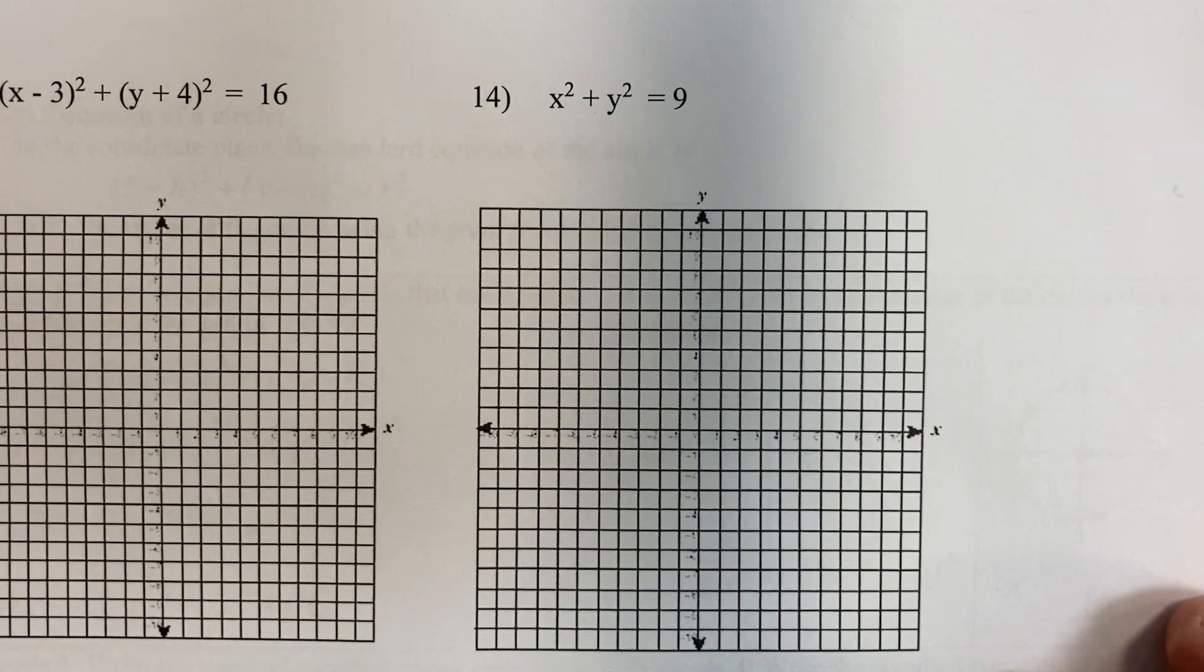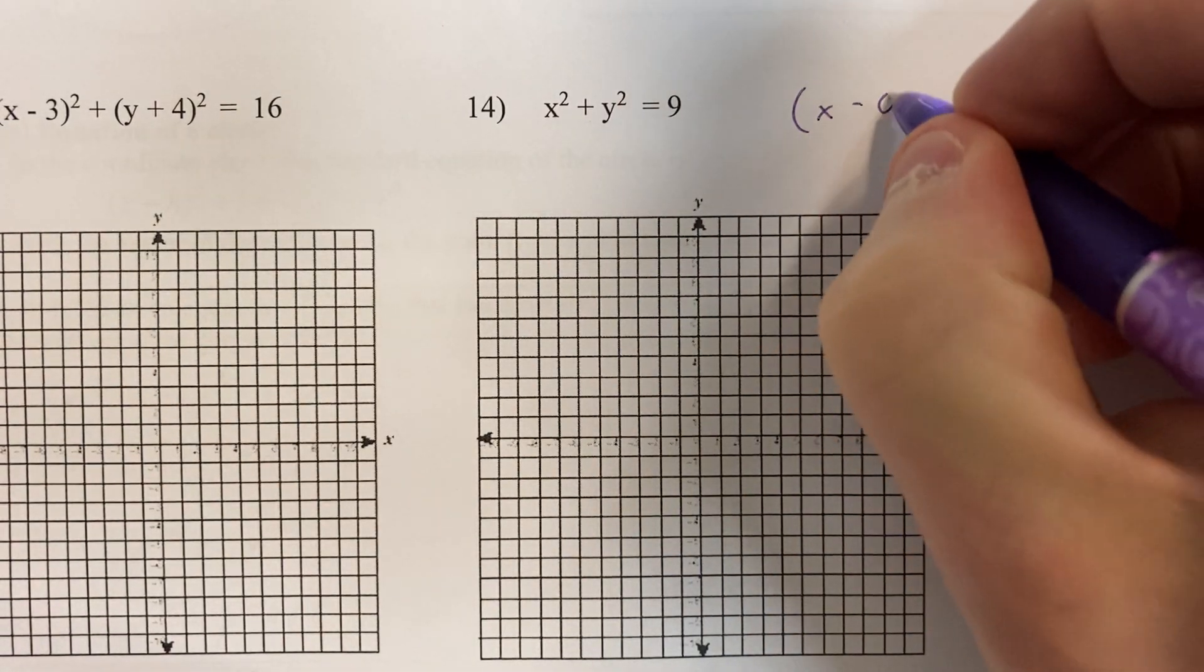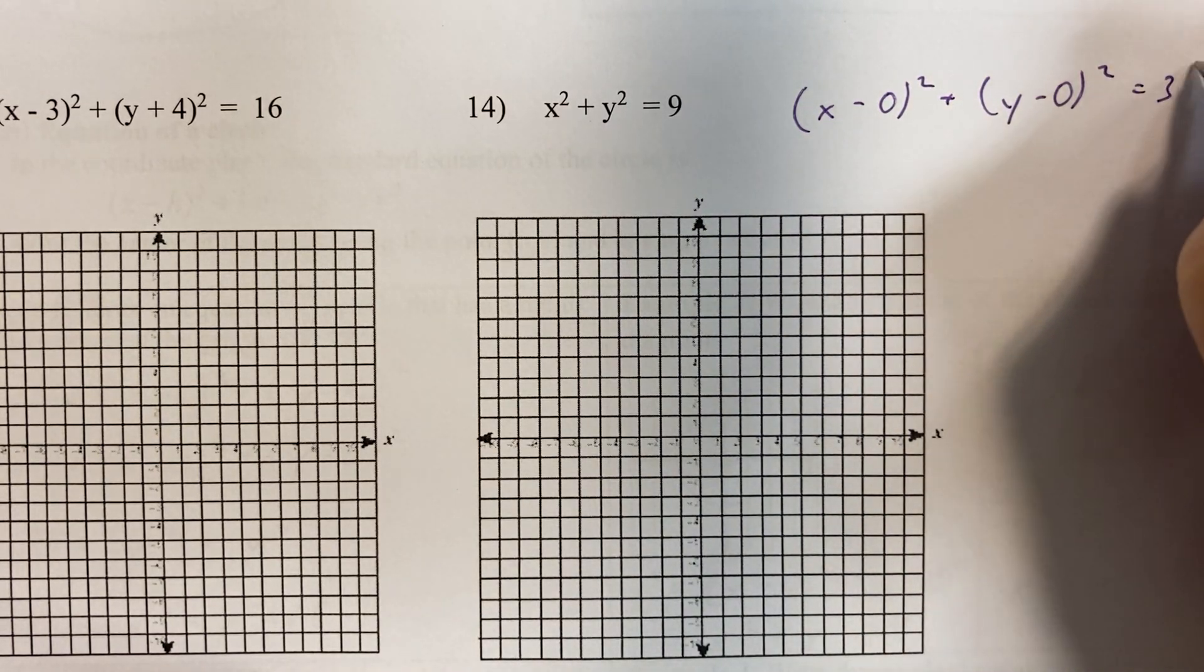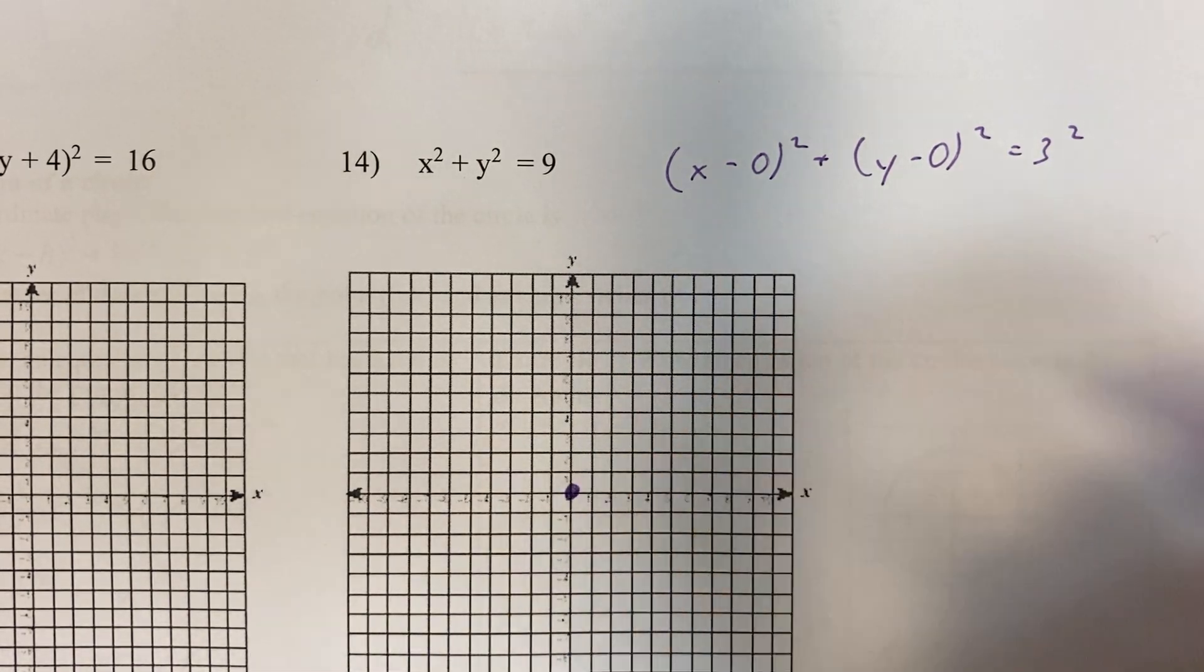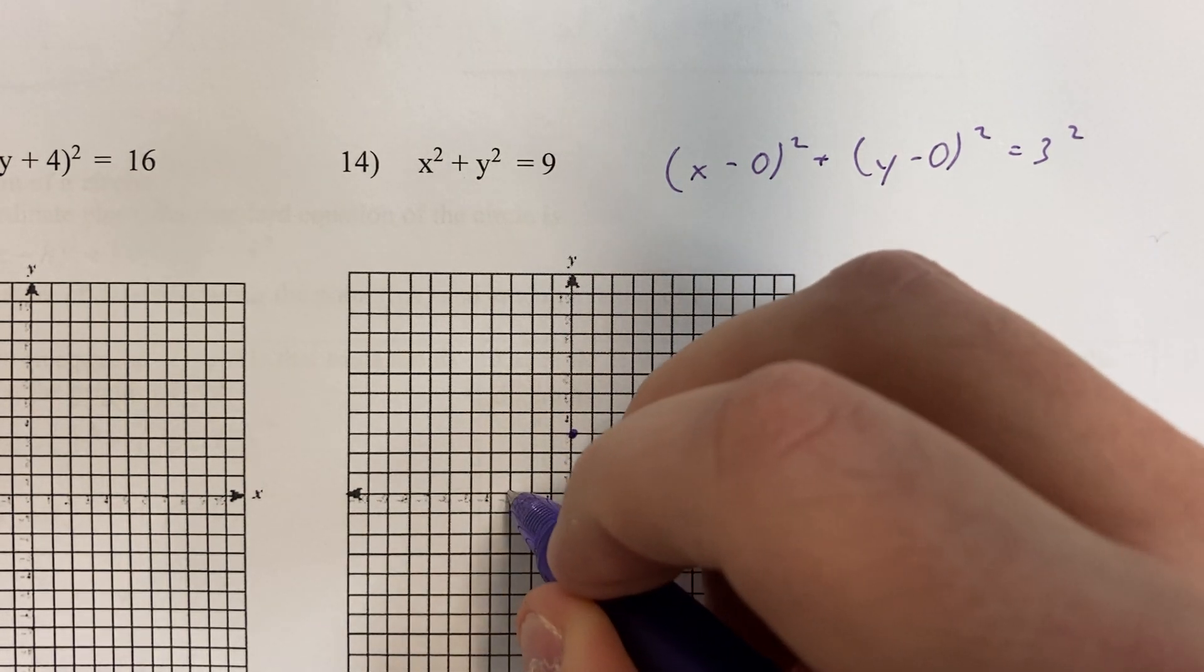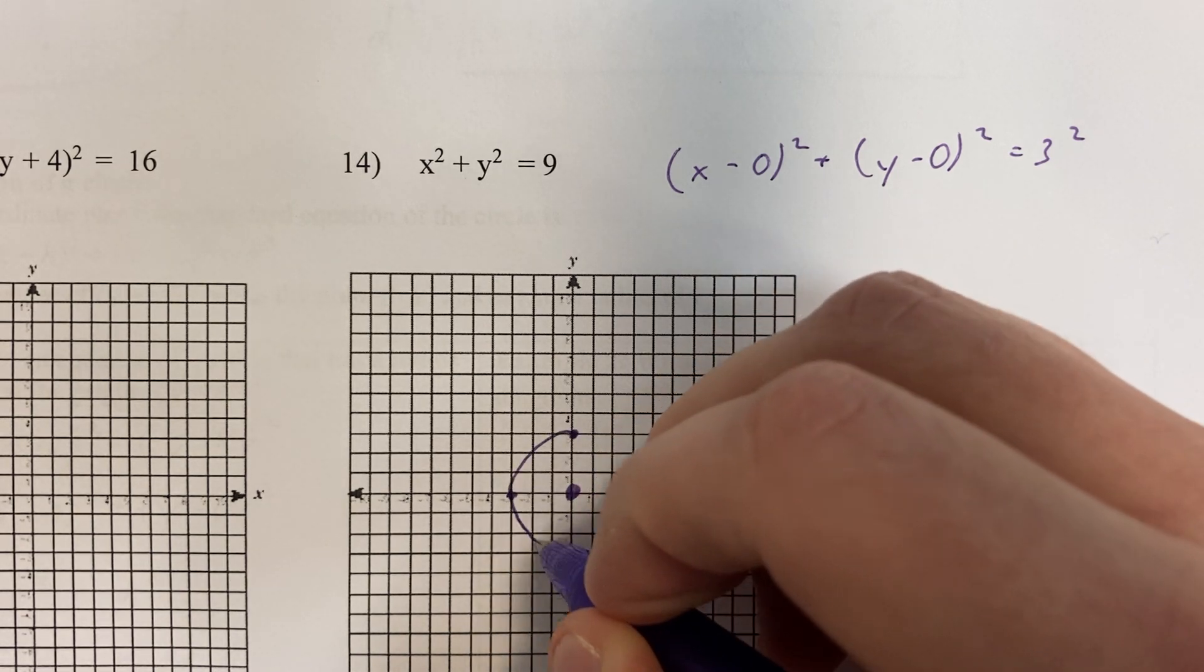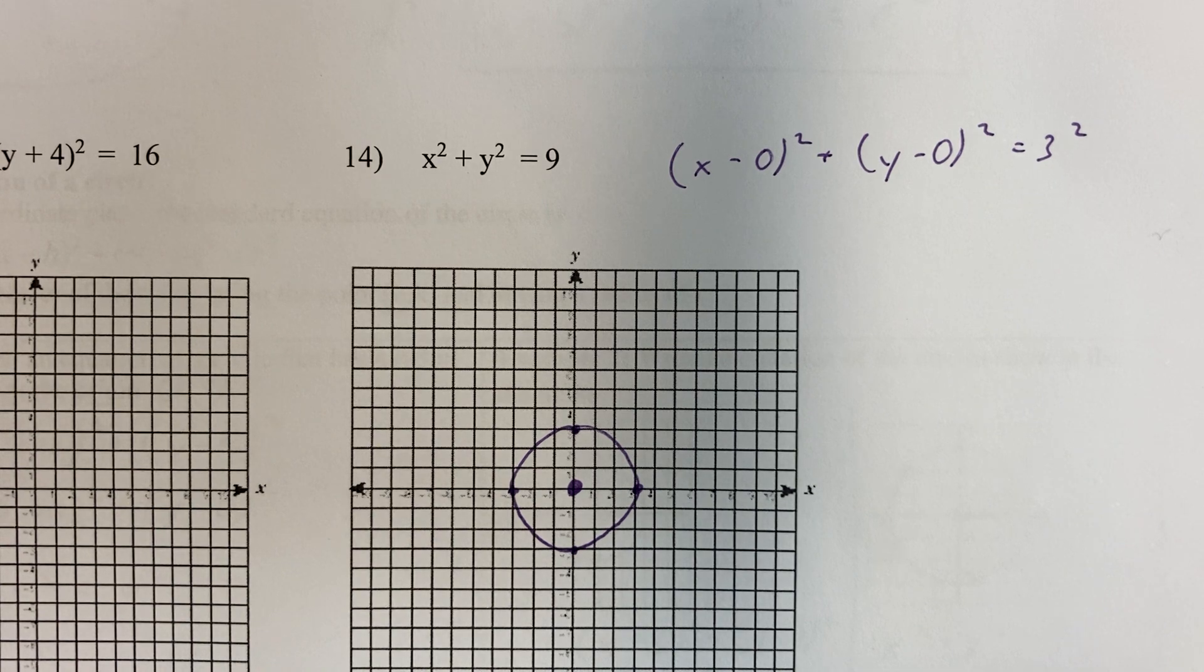Next one. This one we could rewrite like this. That's just centered at the origin with a radius of 3. And we're done. Alright, have a good day.